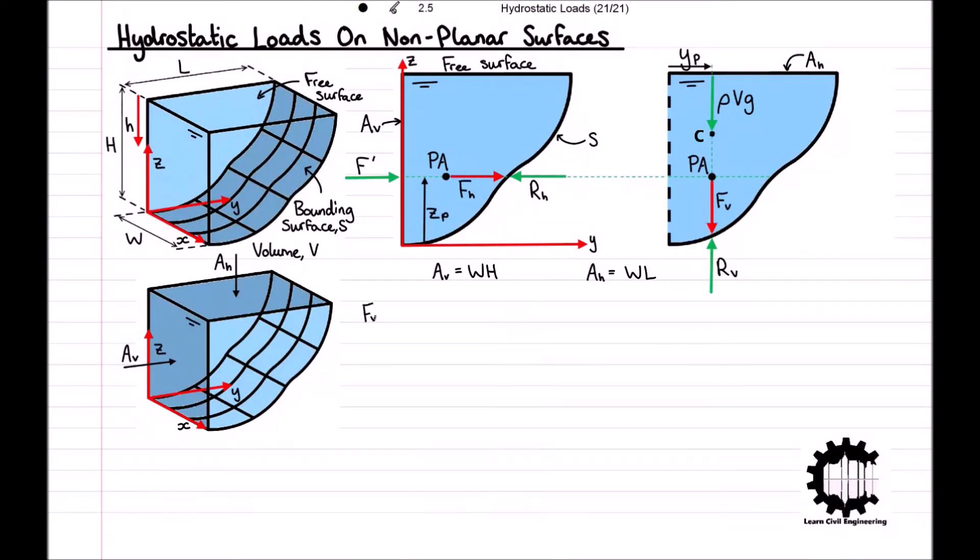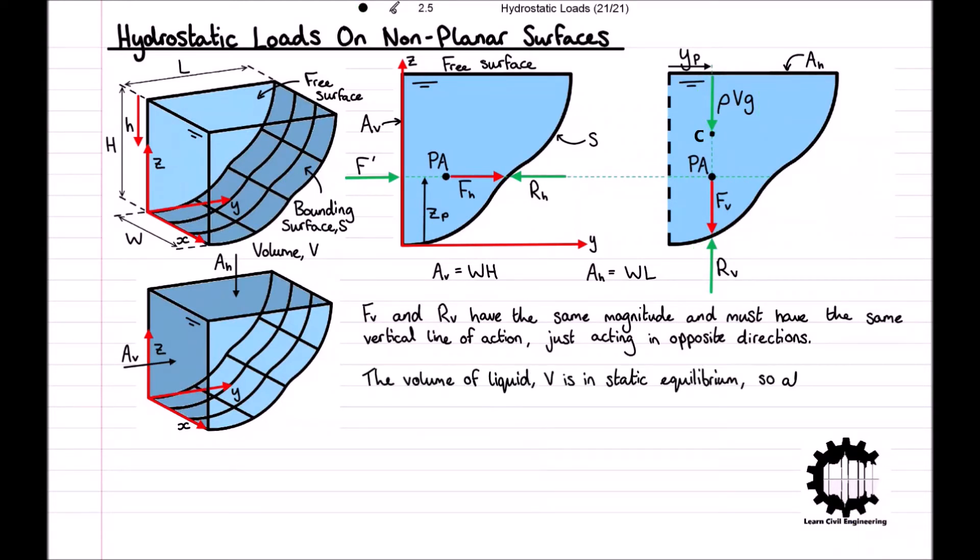It is important to note that FV and RV have the same magnitude and must have the same vertical line of action, just acting in opposite directions. Considering the vertical forces acting on the volume of liquid, we have the reaction force RV and the liquid's weight rho VG. The volume of liquid is in static equilibrium and so all vertical forces acting on the liquid must be in equilibrium. Hence RV minus rho VG is equal to zero, and therefore RV equals rho VG.